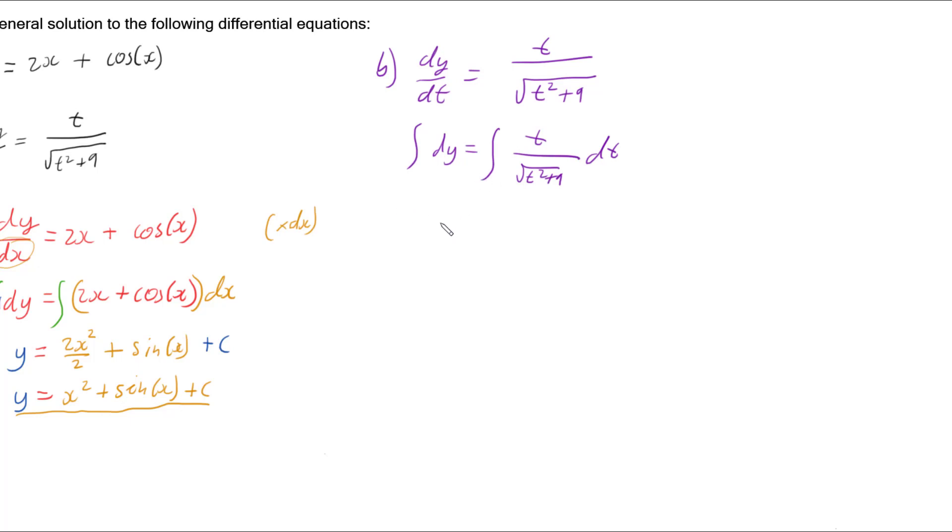And so we have integrating 1 dy gives us y. And this one requires us to do substitution. So let's let u equal t squared plus 9. So du/dt equals 2t.